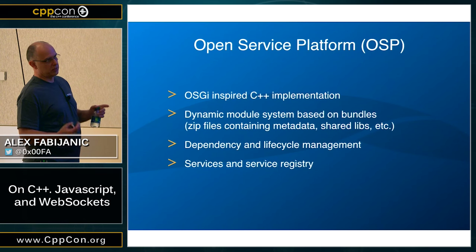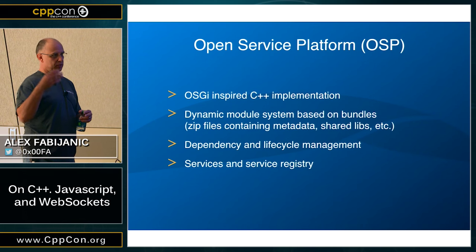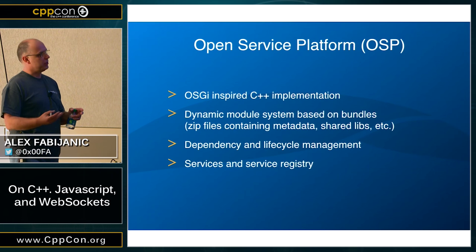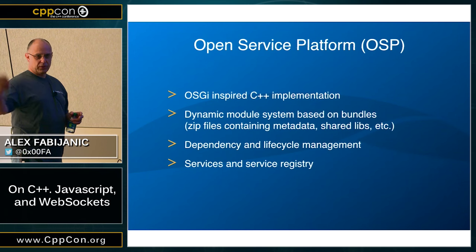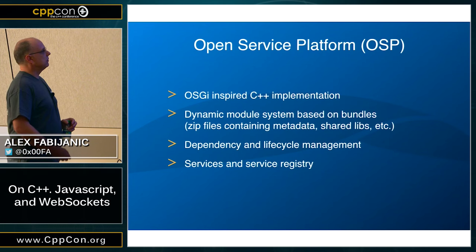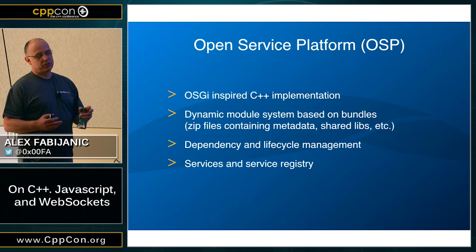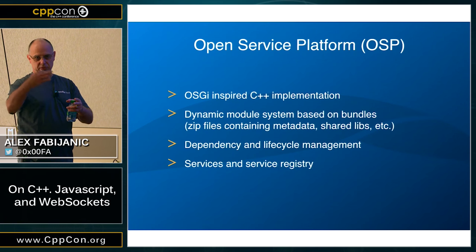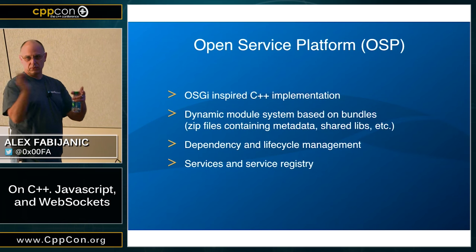OSP has services and service registries. Services are bundles that provide some kind of service — they register with a central location within the OSP application server and are then available to all other bundles with proper permissions. Some services come with OSP ready to go, like a web server service. You can just ask for the web server service, create your handler for HTTP requests, and you're done. With the web server it's even simpler — it's just a matter of configuration. There's an extensions configuration where you say here's my extension point, my handler is in this bundle, and it gets called automatically when assigned to a URL path.